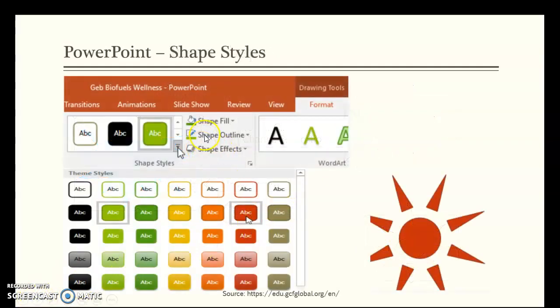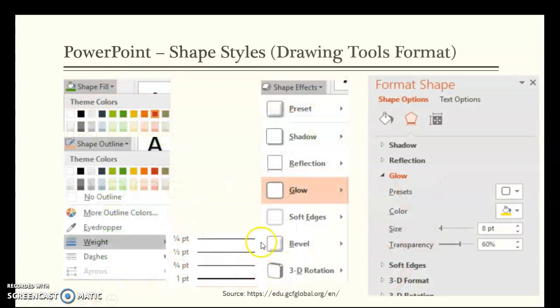You can go into the shape styles, what's available, the colors are limited. Or you can go into shape fill and shape outline and also shape effects. Within the shape fill, this is the weight of the outline, if you wanted to do an outline. There are also dashes that you could select and you can also change the color of the outline. This is under the outline, this top one is the shape fill. You can also go shape fill, shape outline and shape effects.